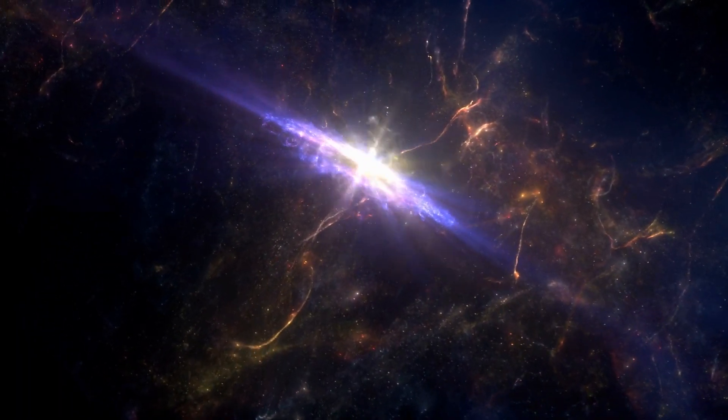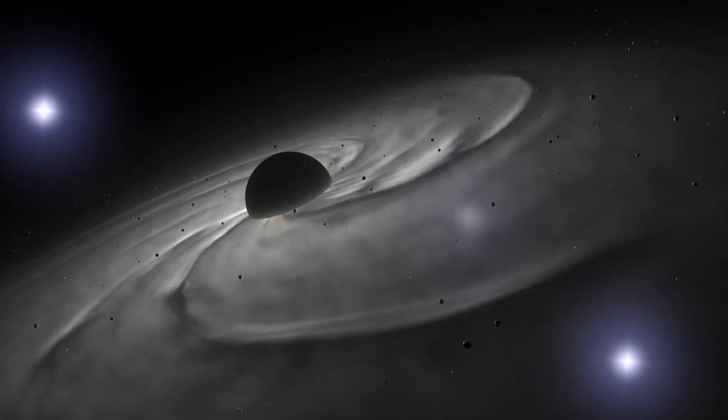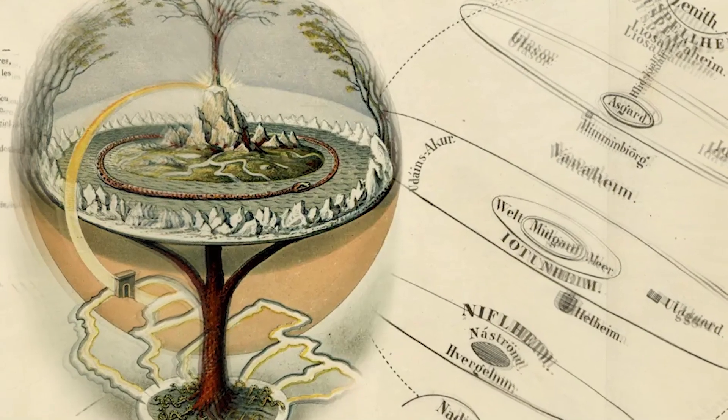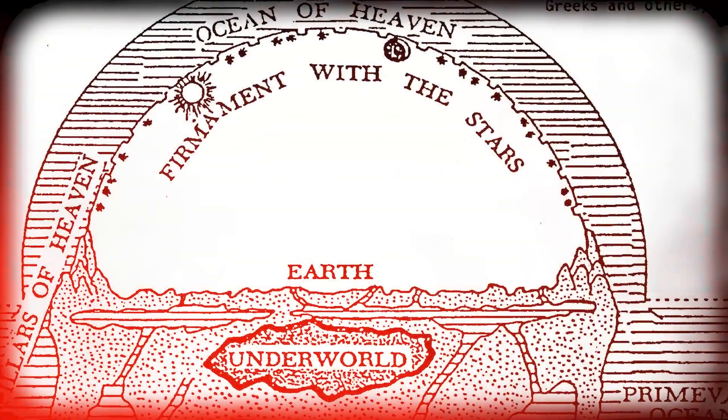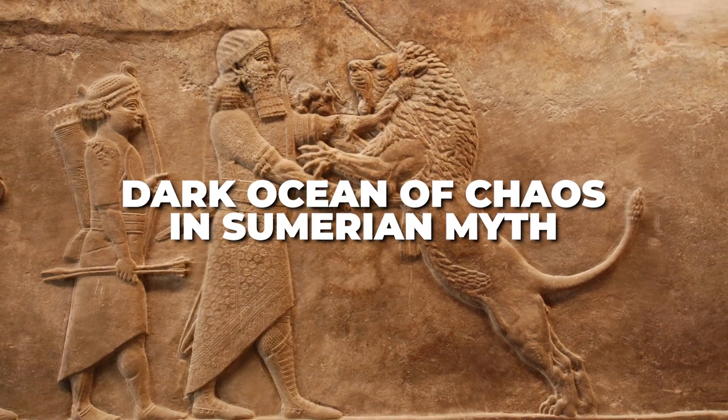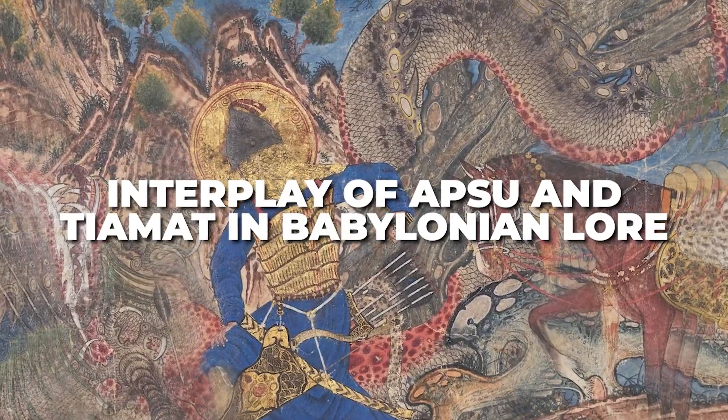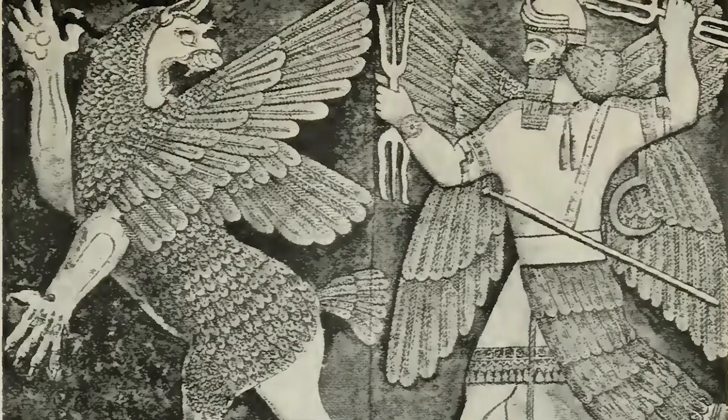According to this view, everything that exists was formed from something that was already there, kind of like cosmic recycling. When we go back to ancient myths and cosmologies, they often portray the universe as being formed from some primordial pre-existing substance. Whether it's the dark ocean of chaos in Sumerian myth or the interplay of Apsu and Tiamat in Babylonian lore, these ancient narratives seldom start with nothing.